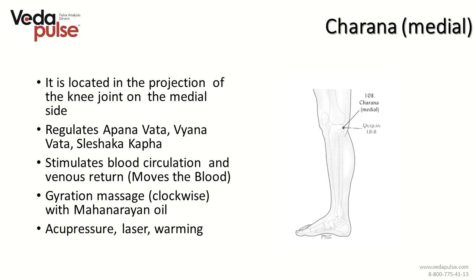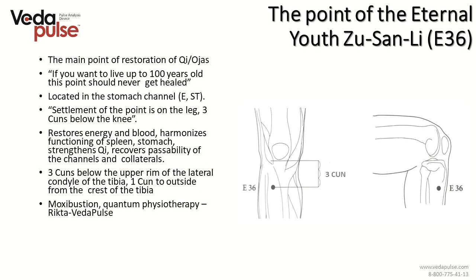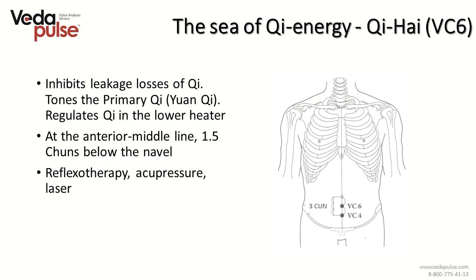Another important marma is Charana marma — a great stimulation of Vyana Vata, which moves the blood — thus influencing blood circulation and venous return. Another unique point is Xuanzhong, the centralization point of the bone marrow, having a very strong systematic effect on the bone marrow and a great blood restoration effect. You can influence this point through reflexotherapy, acupressure laser, moxibustion, warming and corporeal therapy. The eternal youth point Zu Sanli is also used in complex therapy of anemic syndrome — it restores energy and blood, harmonizes functioning of spleen and stomach, strengthens Qi, and recovers passability of channels and collaterals. The sea of Qi energy point Qi Hai may be helpful in cases of chronic blood loss as well as in treating female disorders.